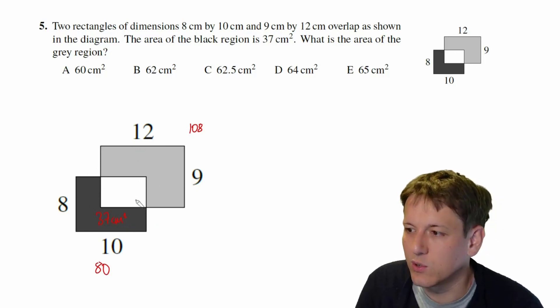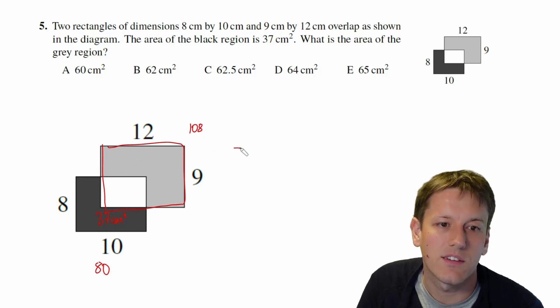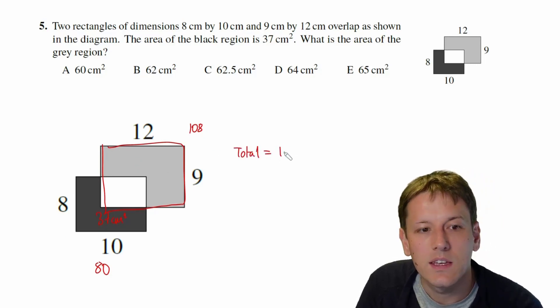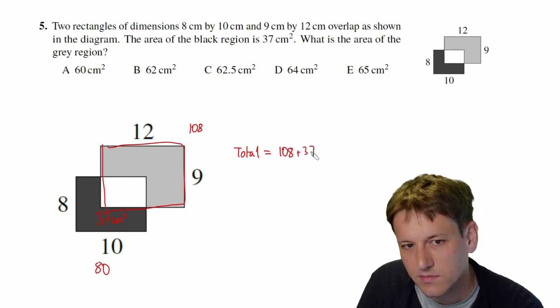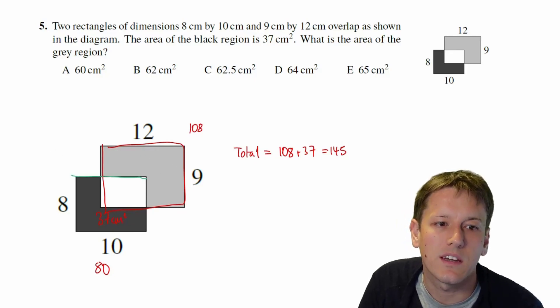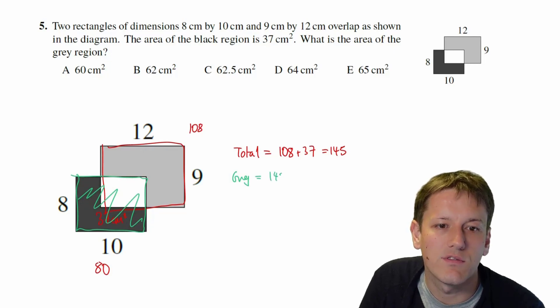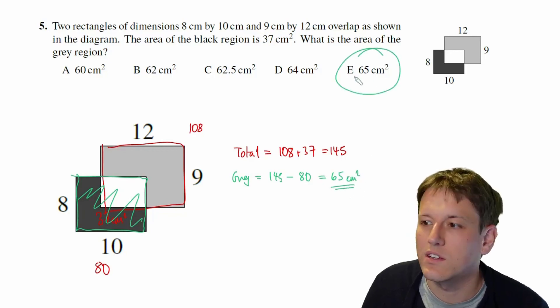We want the area of the gray region. The easiest way to see this is just to say, well okay, we know the total of the whole shape because it would just be this rectangle here plus the 37. So the total area here is 108 + 37, which is 145. And then if I just want the gray bit, I can take the total of the whole overlapping shape and get rid of the green part, and that will just leave this gray area here. So the gray area is going to be 145 - 80, and that will give 65 centimeters squared. And so the answer here is E.